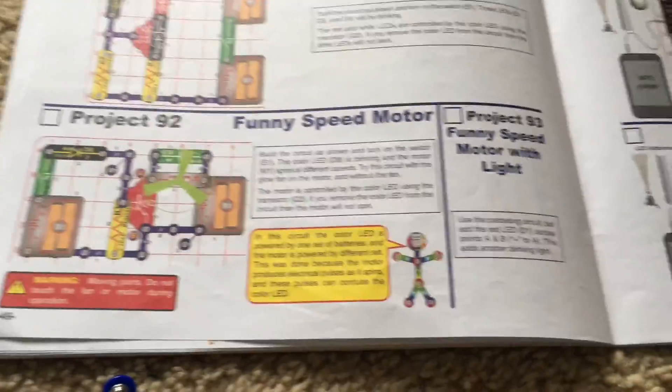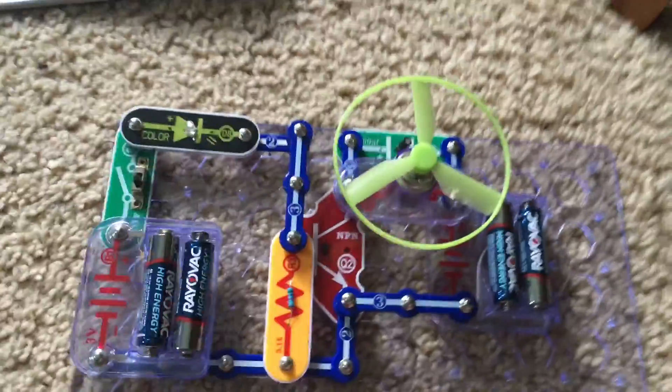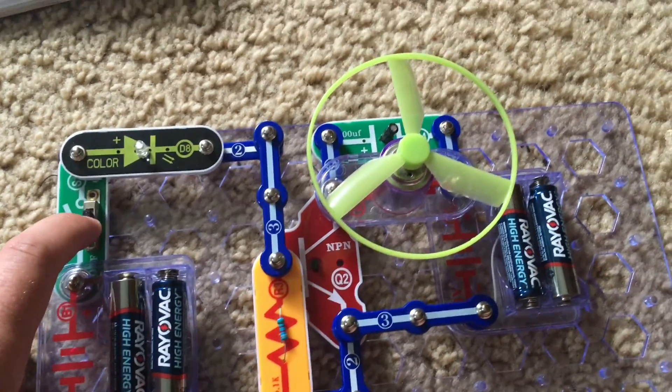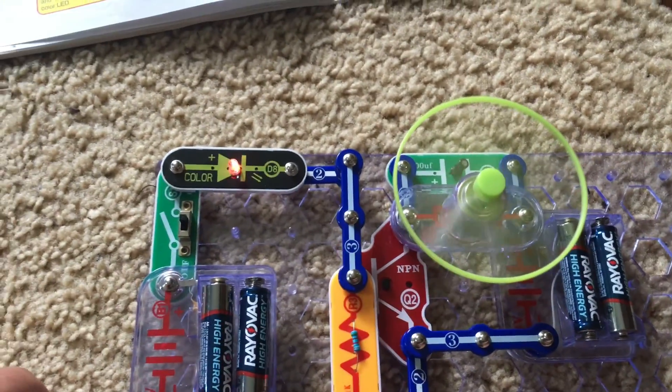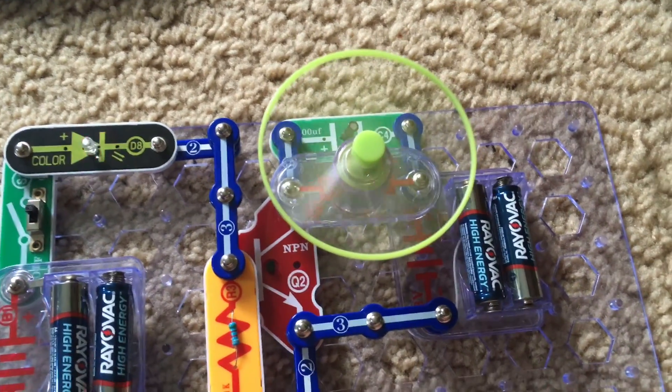Project 92 is funny speed motor. This project is very interesting. We are going to build the following circuit, which I already have, and turn on the slide switch. Look what happens as the color LED flashes and changes colors.